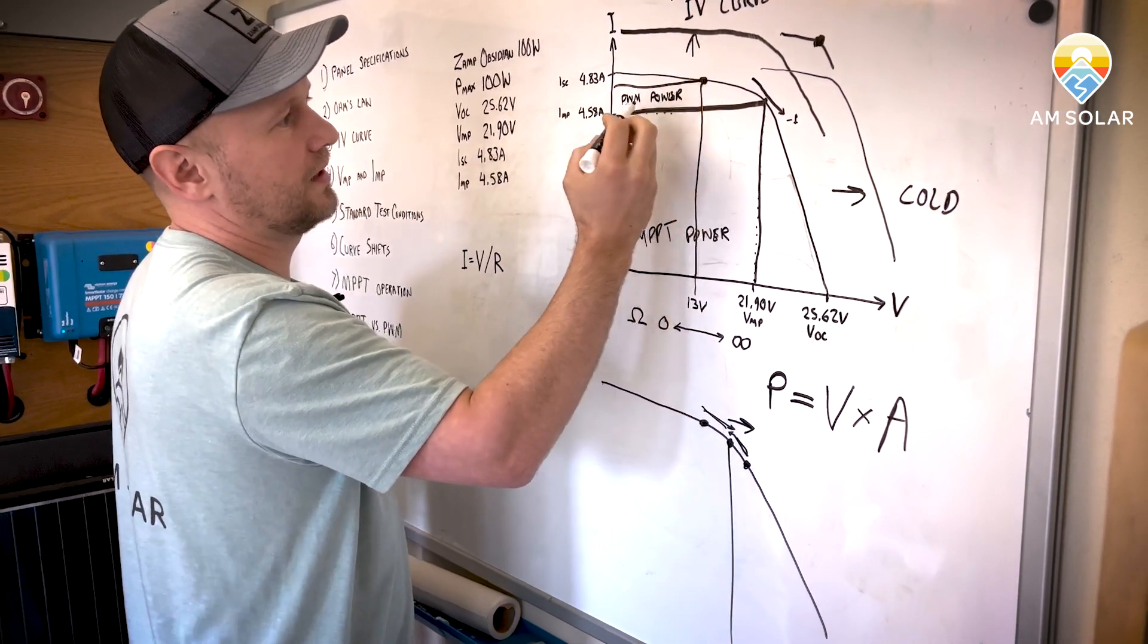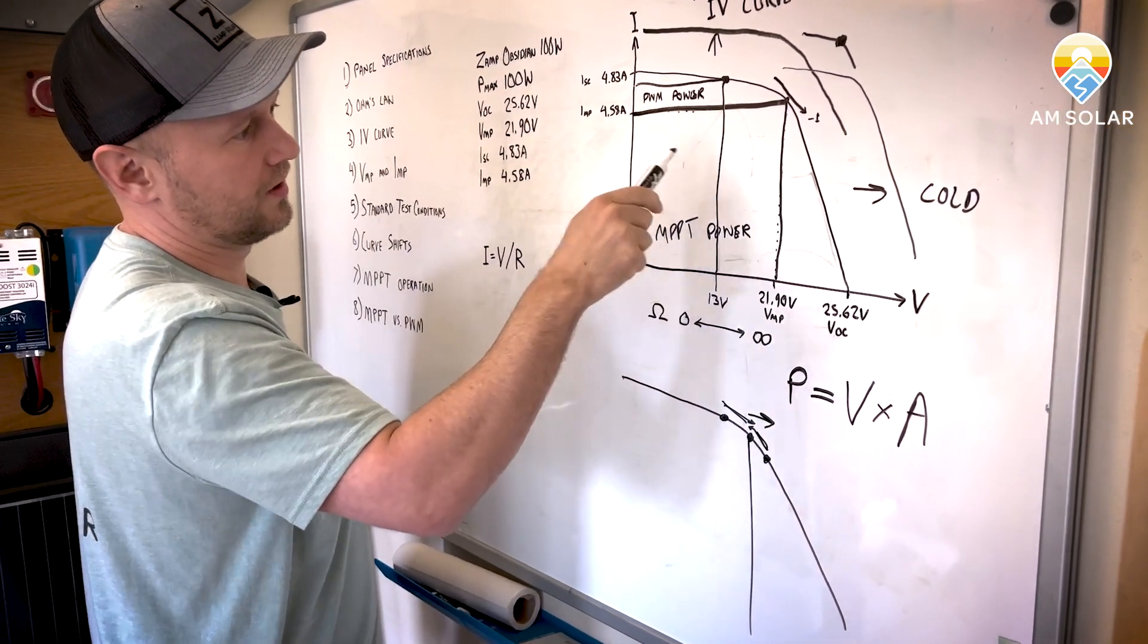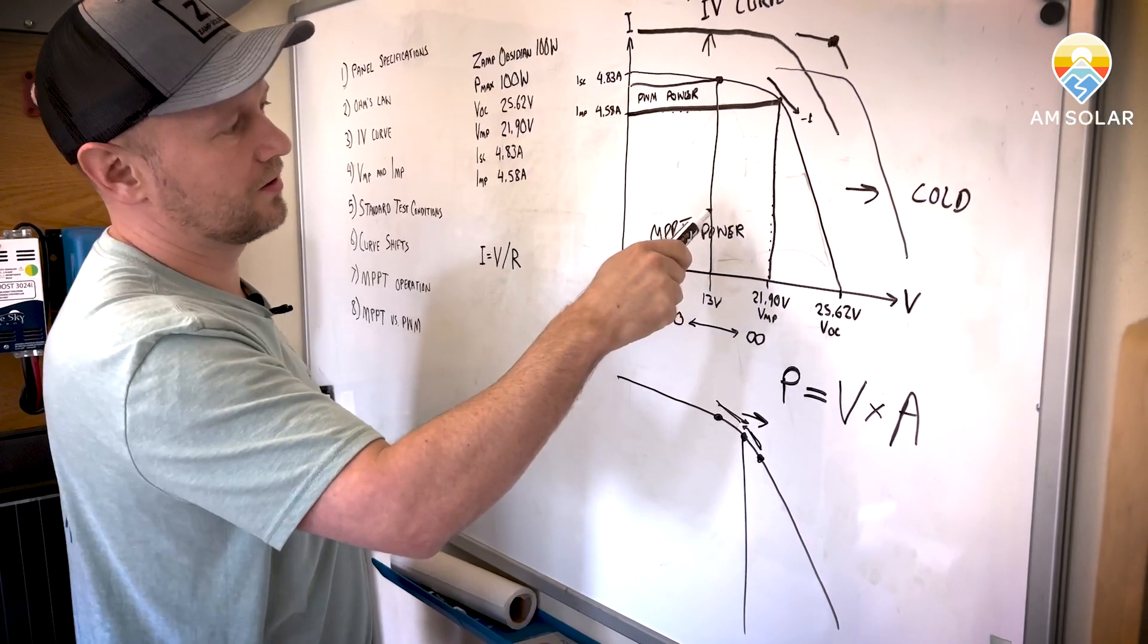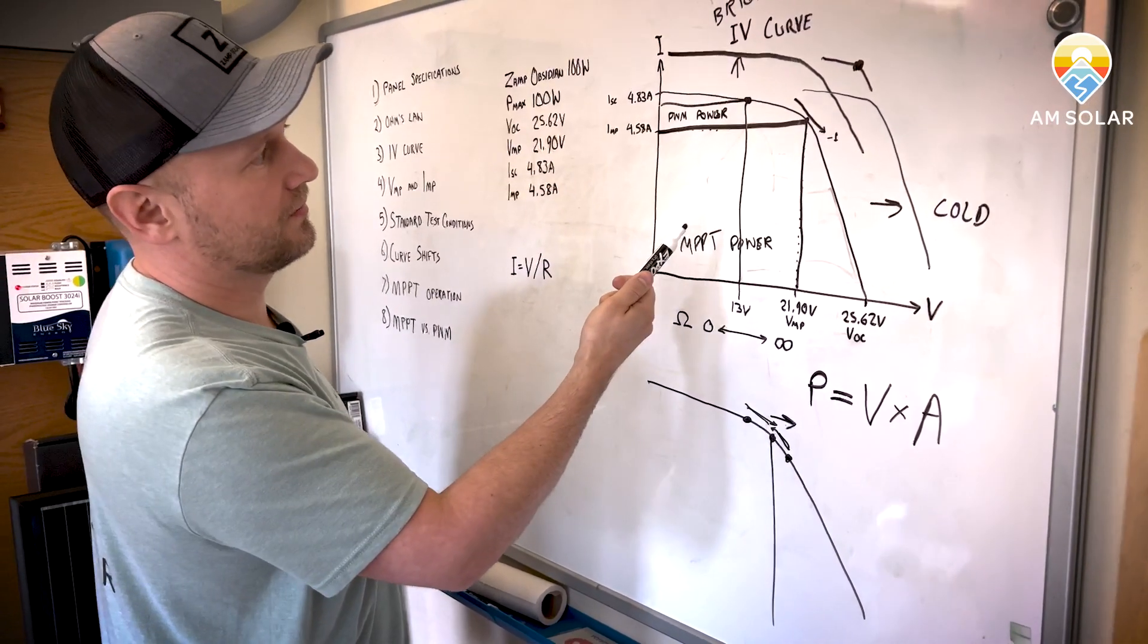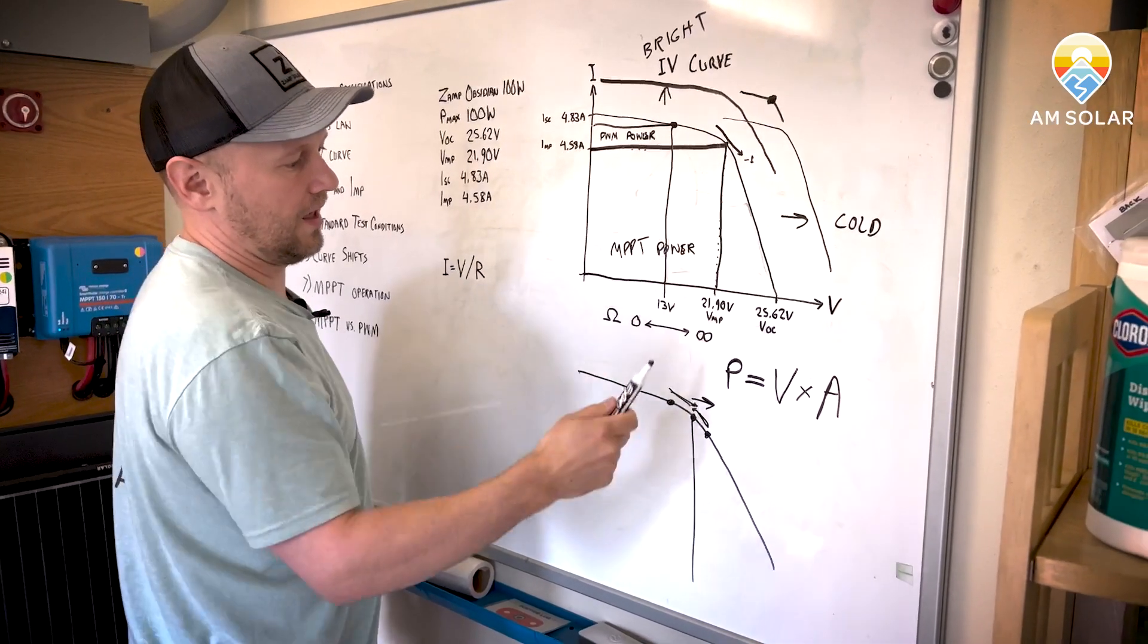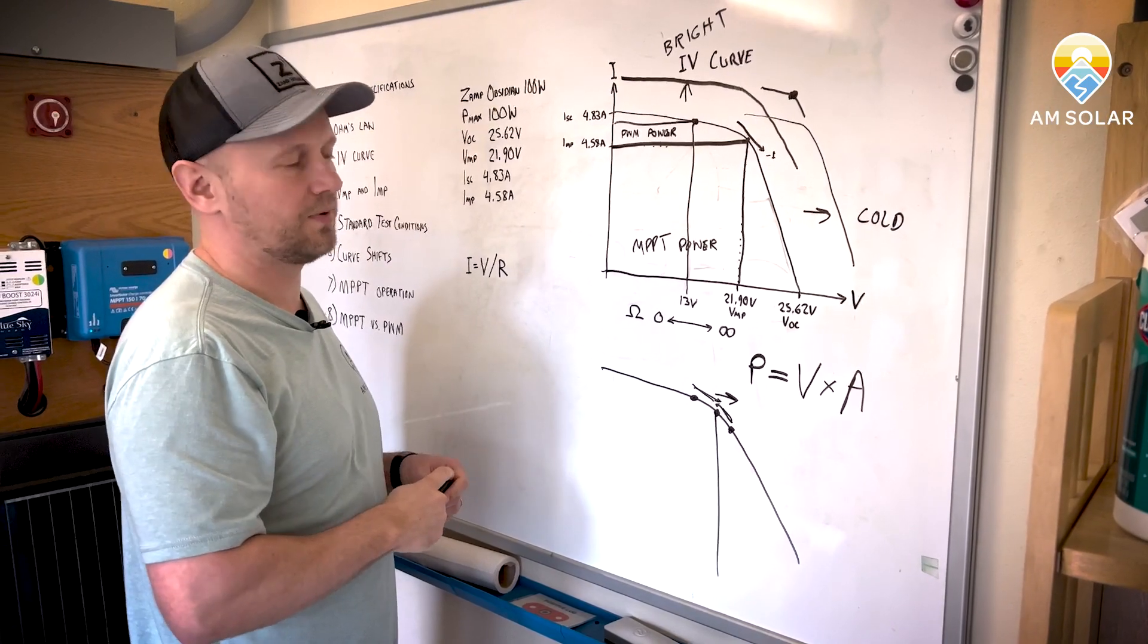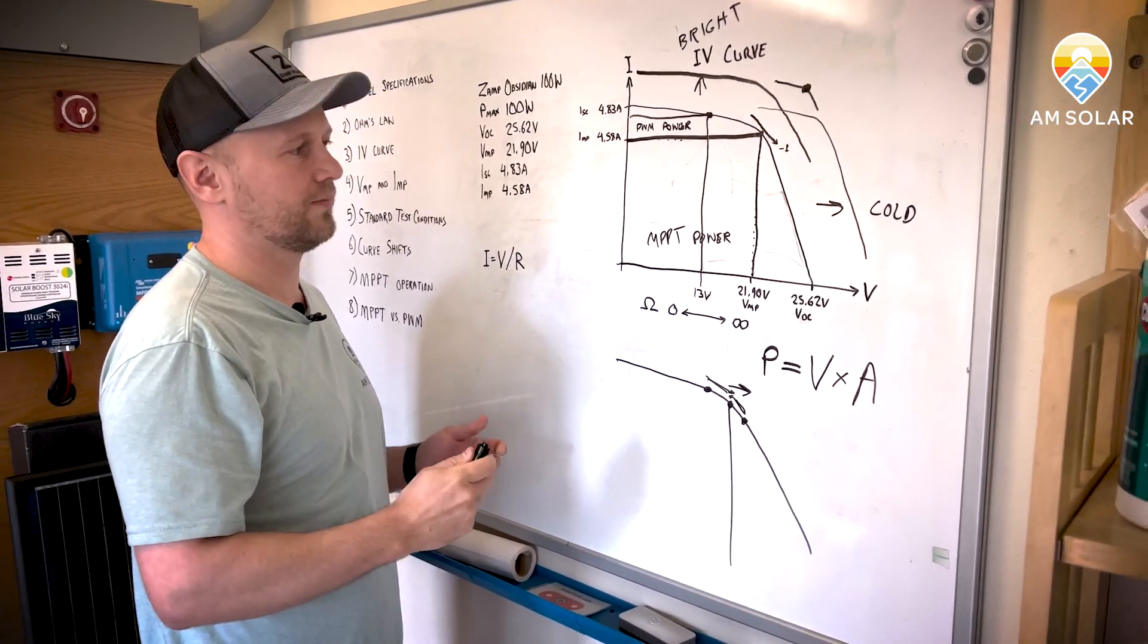You can see that the size of this rectangle versus that rectangle is quite a bit different. Because the PWMs aren't as efficient. They're not tracking. And it usually works out to be about a 20% difference. The MPPT charge controllers work about 20% better.